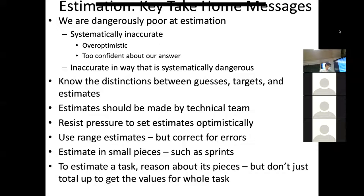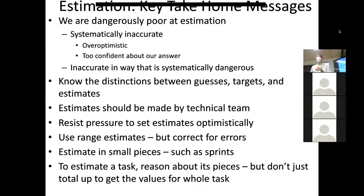Range estimates also give the sense of worst case and best case, which can be very helpful for informing a manager's sense of risk. Another principle that agile approaches really emphasize is that it's much better to estimate a small sprint — maybe two weeks at a time, not three months. And to estimate in an informed, scientific way: break it down in your head, enumerate the pieces, think about how long each would take, what could go wrong, contingency issues like vacations or team absences.